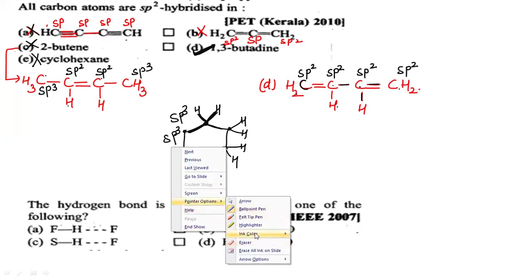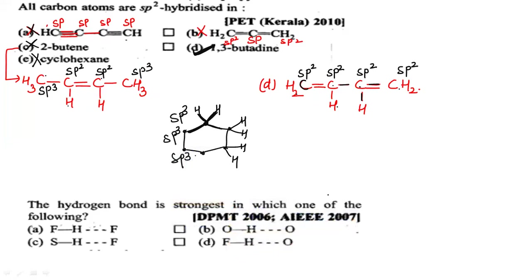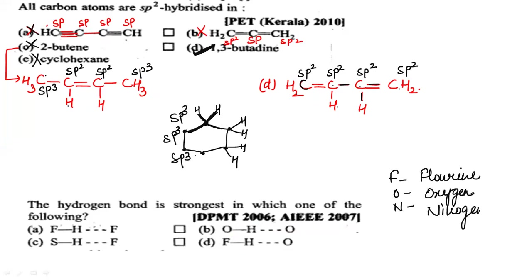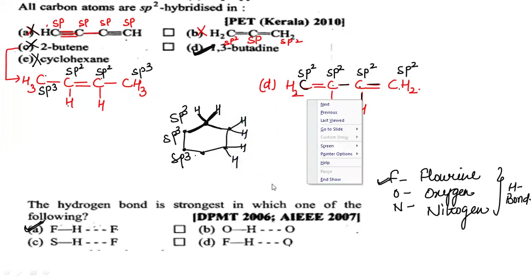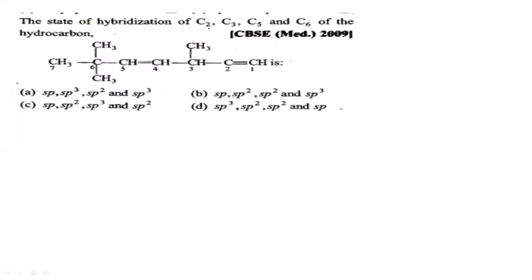Next question: hydrogen bonding is strongest in which group? As I've explained many times in videos, use the mnemonic 'FON' — Fluorine, Oxygen, Nitrogen — these are the three elements capable of forming hydrogen bonds. Hydrogen bonding is strongest in the case of fluorine, i.e., in HF. Here only fluorine is present, not oxygen, so option A is correct.